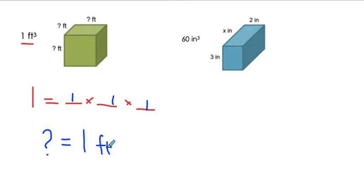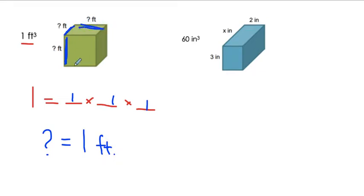It's not cubic feet because you're just taking the measurement of one side — one length, which is only one foot long. We're not taking the whole space inside; we're just doing the measurement of one side. So it's one foot by one foot by one foot to get a total of one cubic foot.